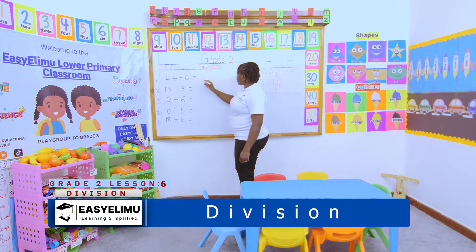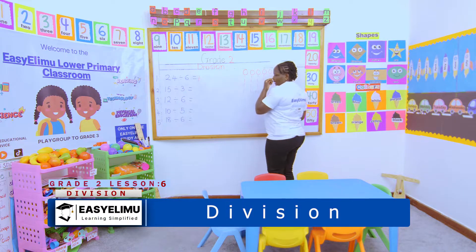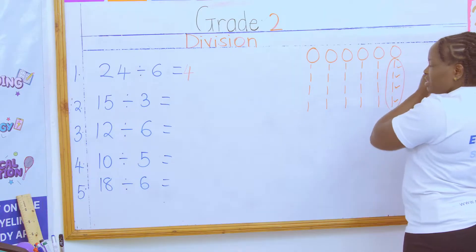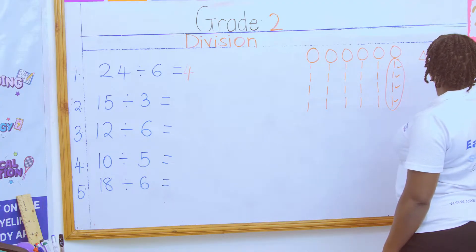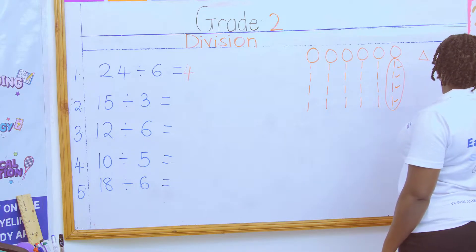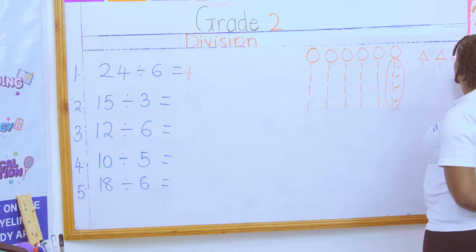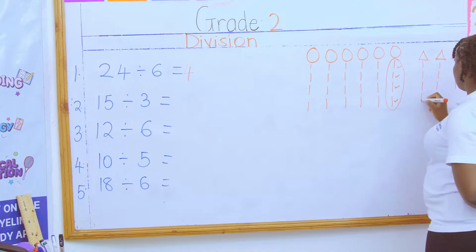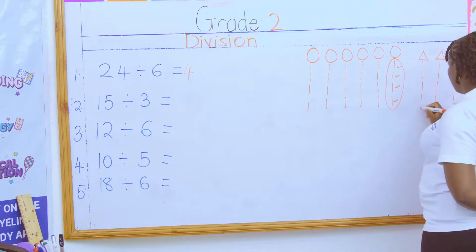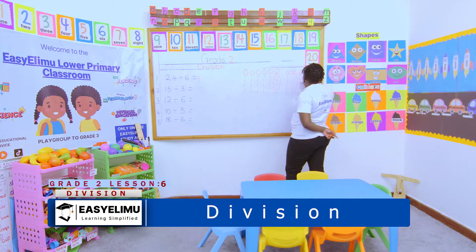Then I have 15 divided by 3 — wait, three, not four, sorry. So those are the three groups. I count out one through fifteen, sharing among three.